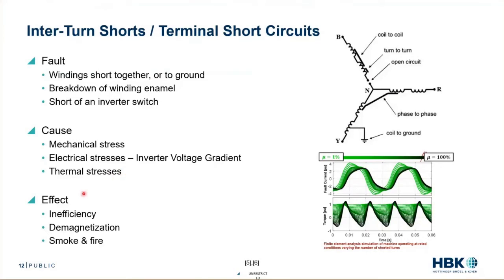The effects include inefficiency because power is not going where we want it, potentially demagnetization — which is the next failure mode we'll touch on — and in many cases smoke and fire. Here's an example: if we have a fault current with two windings shorted together, going from one percent faulted to 100 percent faulted in a given coil, we can see that the currents don't change all that much, but even a small fault creates a torque disturbance, and a large fault creates a very large torque disturbance. So you're now experts on inner turn shorts — stator windings get shorted together, creating large unwanted currents and heat.